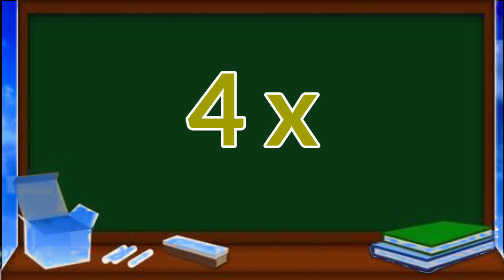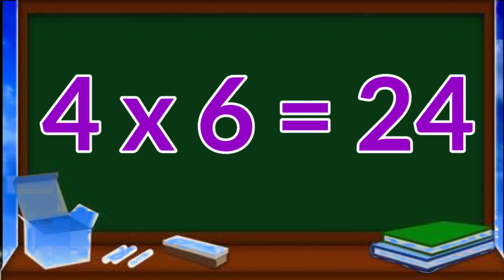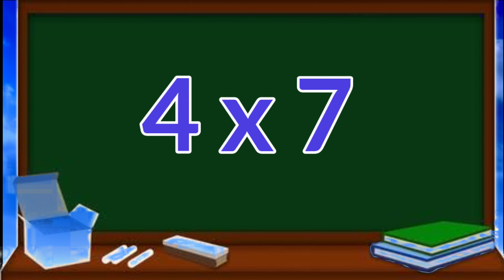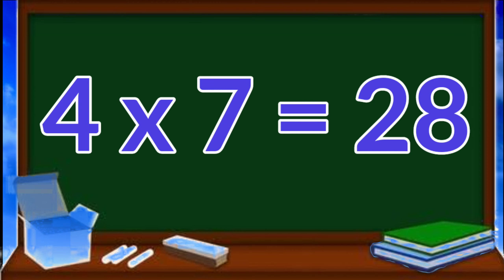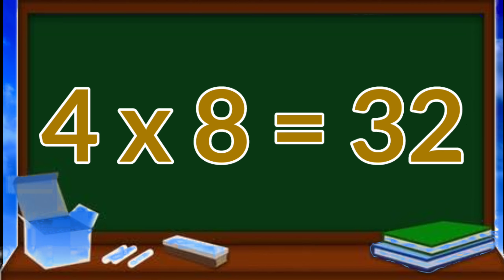Four fives are twenty. Four sixes are twenty-four. Four sevens are twenty-eight. Four eights are thirty-two.